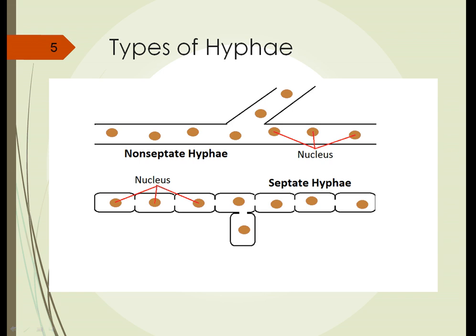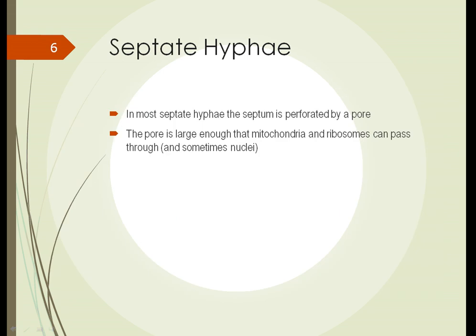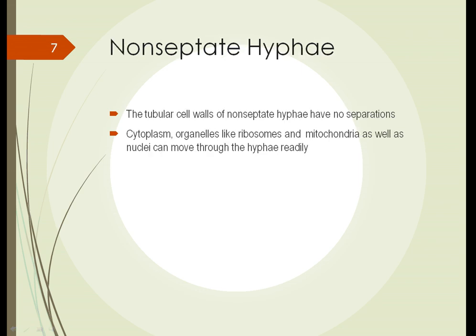This diagram shows the two types of hyphae. The top one is the non-septate hyphae — the individual cells aren't separated from each other and they form long tubes. The bottom one is the septate hyphae, where individual cells are separated by a wall called a septum, or septae in plural, with visible openings between the cells. Septate hyphae have the septum perforated by a pore large enough that mitochondria and ribosomes — and sometimes even a nucleus — can pass through to a neighboring cell. In non-septate hyphae, the tubular cell walls don't have those separations, and the cytoplasm and organelles like ribosomes, mitochondria, and nuclei can move freely up and down the hyphae.